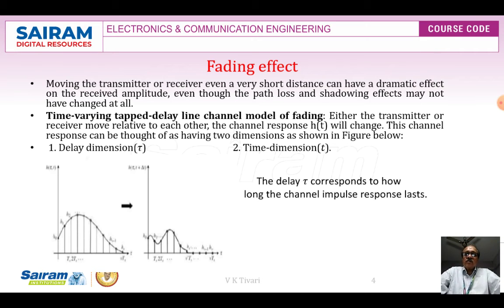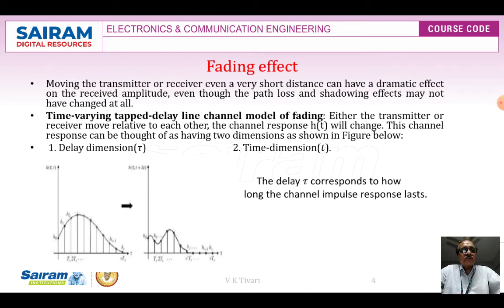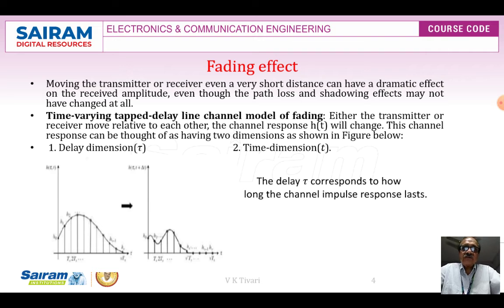Even though the path loss and shadowing effects may not have changed at all. In the time-varying tap delay line channel model of fading, either the transmitter or receiver moves relative to each other — for example, a subscriber moving while connected to a base station. The channel response h(τ,t) will change, and this channel response can be thought of as having two dimensions: one is the delay dimension.